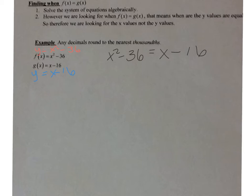Okay, so now we want to take this quadratic equation and set it equal to 0. So I'm going to move everything over to the left, minus x and add 16. So I have x squared minus x, negative 36 plus 16 is negative 20, and that equals 0.